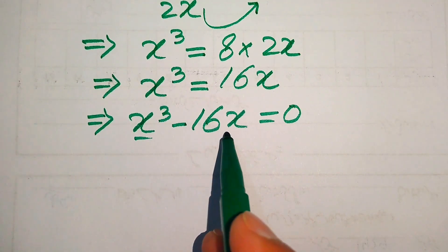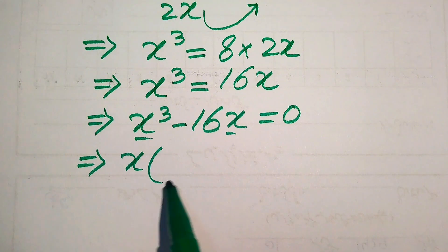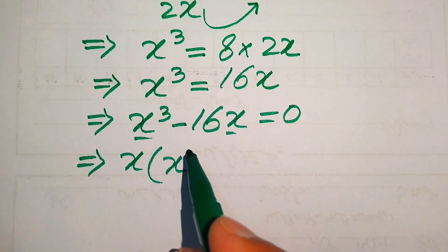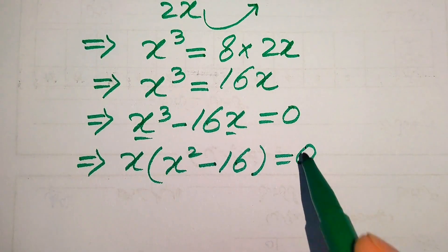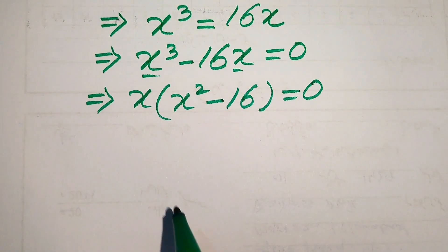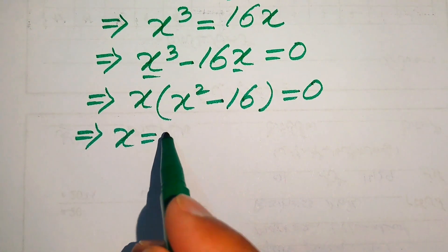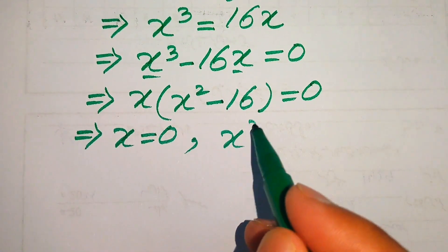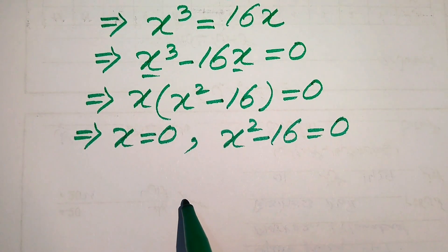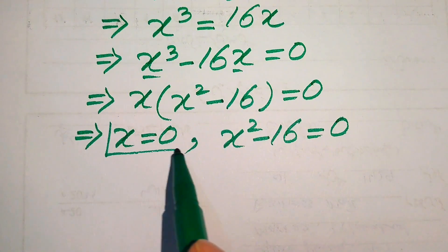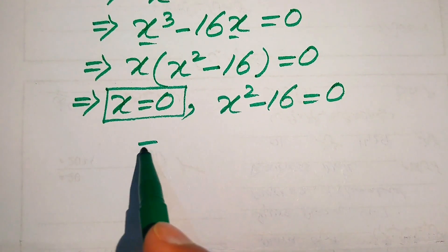We move 16x to the left-hand side: x cubed minus 16x equals 0. Both terms involve x, so we factor out x, giving x times (x squared minus 16) equals 0. We split into two cases: the first case is x equals 0, and the second case is x squared minus 16 equals 0. So x equals 0 is the first root of the equation.